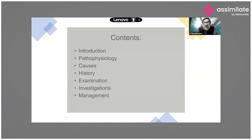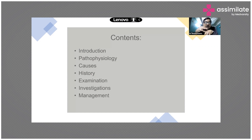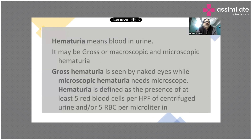First I'll cover the introduction — what is hematuria, what is macroscopic hematuria, and what is microscopic hematuria. Then I'll briefly touch on pathophysiology, then move to causes, then diagnostic criteria involving history, examination, and investigations to rule out various disease factors. Finally, I'll cover management but not in detail — that's for the nephrology team.